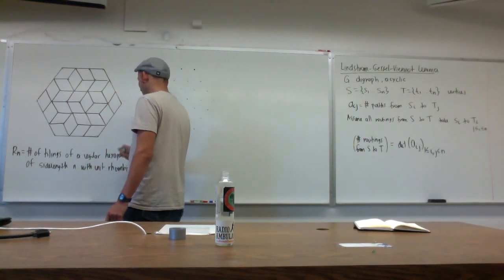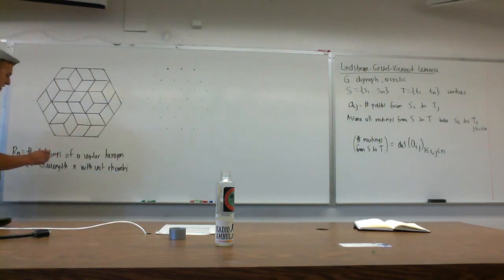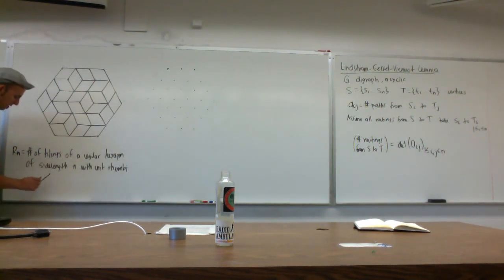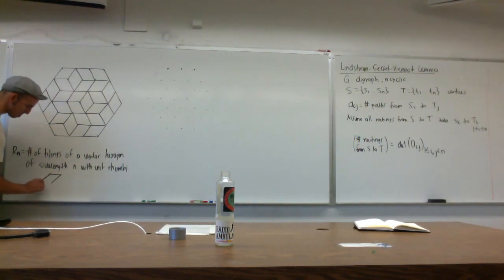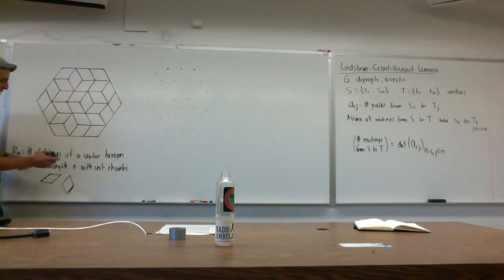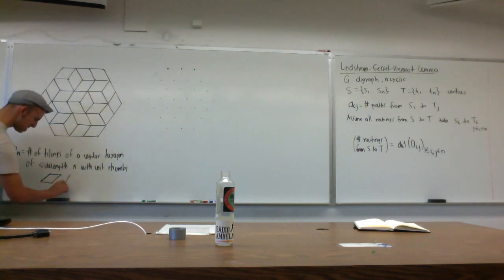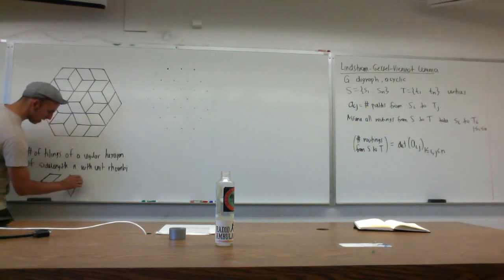Rhombi is the plural of rhombus. The unit rhombi can take three directions — like this, like this, and like this. These rhombi all have angles of 60 and 120 degrees.